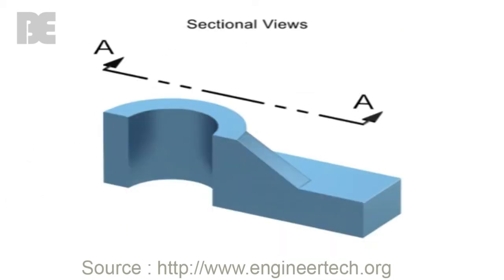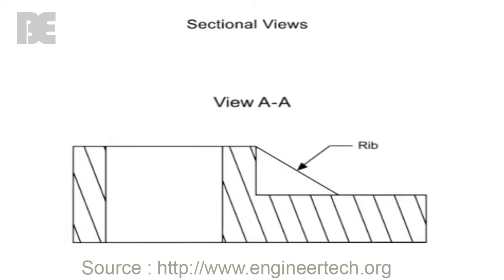Once an object is sectioned, pattern lines called section lines are added to indicate the remaining material. Only the material that has been cut or sectioned is given patterned section lines.